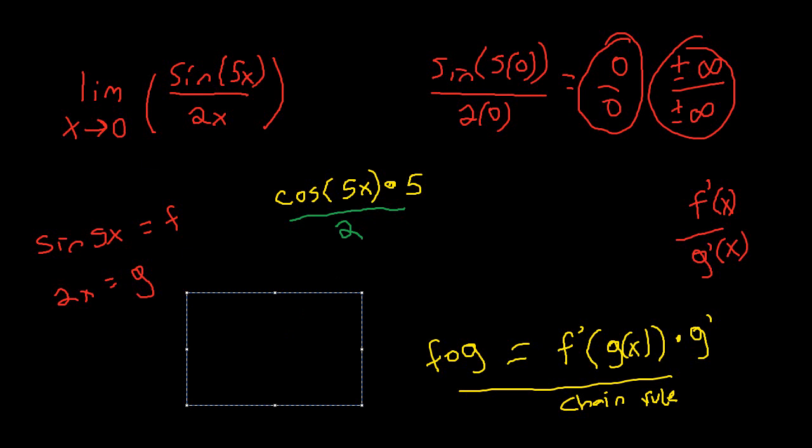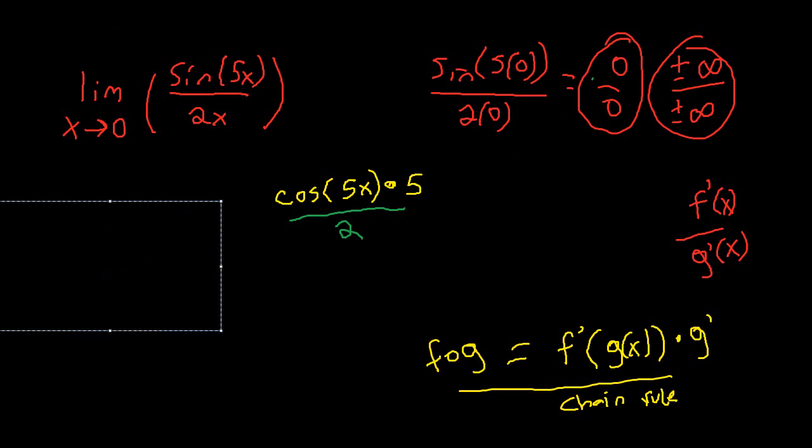And now we've gotten rid of the situation where we would have an undefined little function. So now we can say, what is the limit as x approaches 0 for this new little function we made? Well, if we substitute 0 in, let's say for this x value here, put a 0 inside there, it's just going to be 0 times 5. That's going to be 0. Cosine of 0 is going to be 1. 1 multiply 5 is 5. So the limit as x approaches 0 for this function here is just going to be 5 over 2. And that's our final answer.